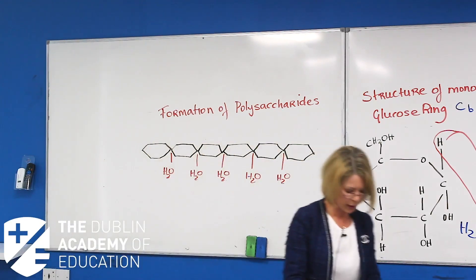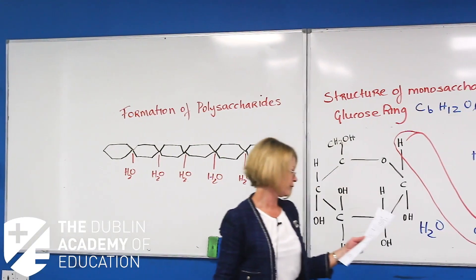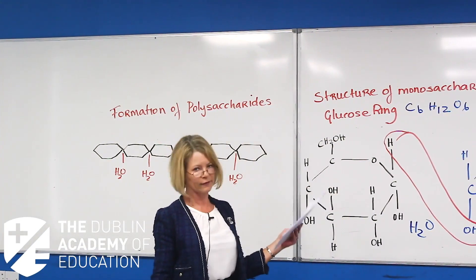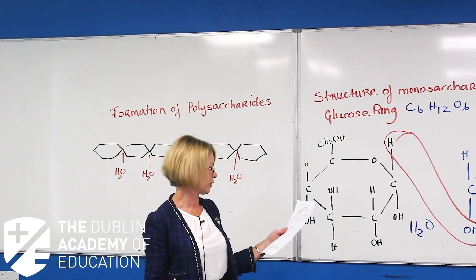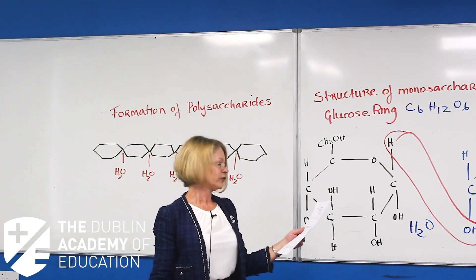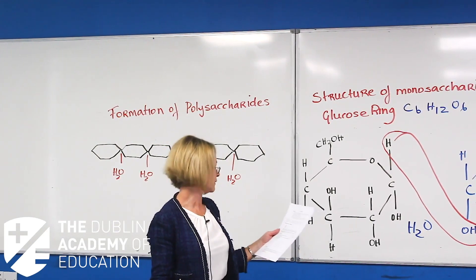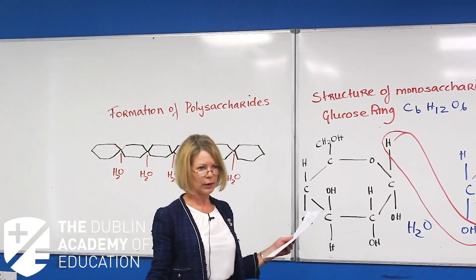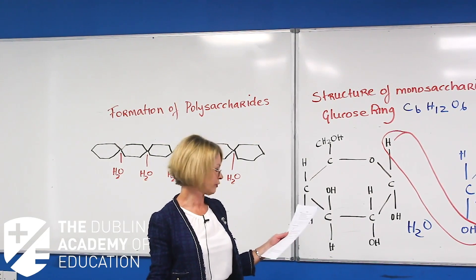Drawing your attention to the first page of your carbohydrate notes: the elemental composition is carbon, hydrogen, oxygen. The classification — monosaccharides are single units, disaccharides are double units, and polysaccharides are many units in a long chain.